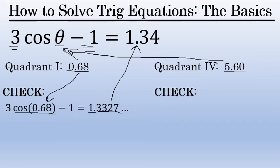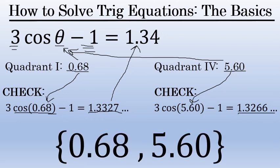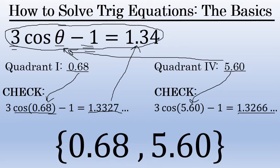Now let's check the quadrant four answer, 5.60. Substituting 5.60 for theta: 3 times the cosine of 5.60 minus 1 is approximately 1.3266. Again, not exactly 1.34, but within the margin of error, confirming that 5.60 is the second correct solution. So between 0 and 2 pi, the two solutions to 3 cosine theta minus 1 equals 1.34 are theta equals 0.68 and theta equals 5.60.